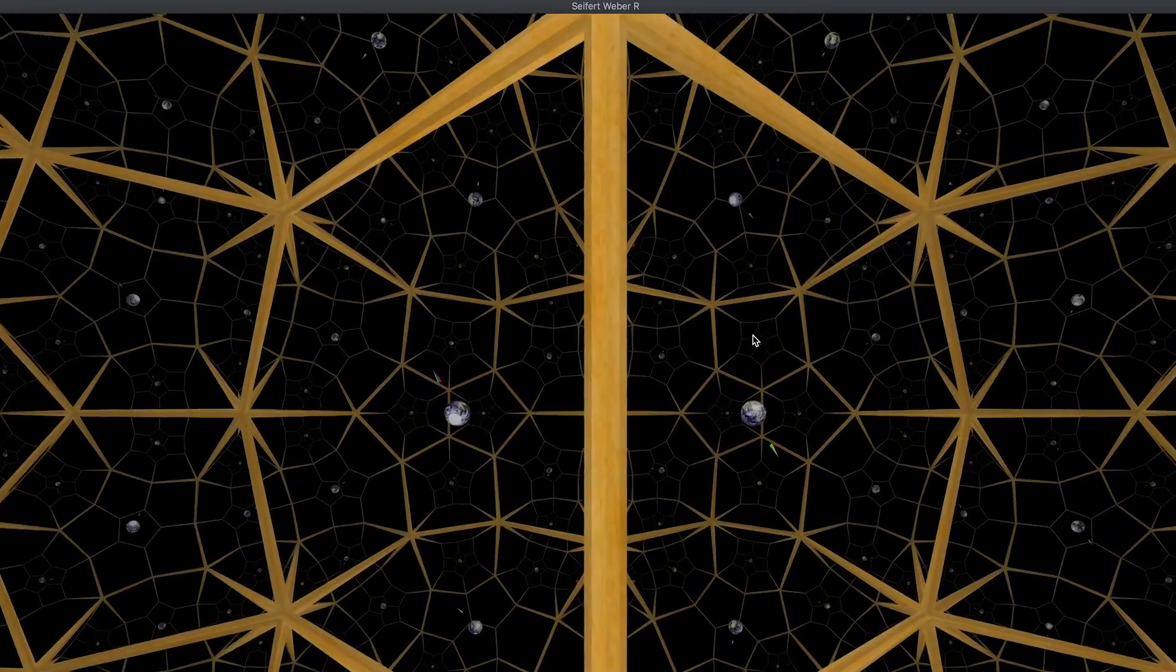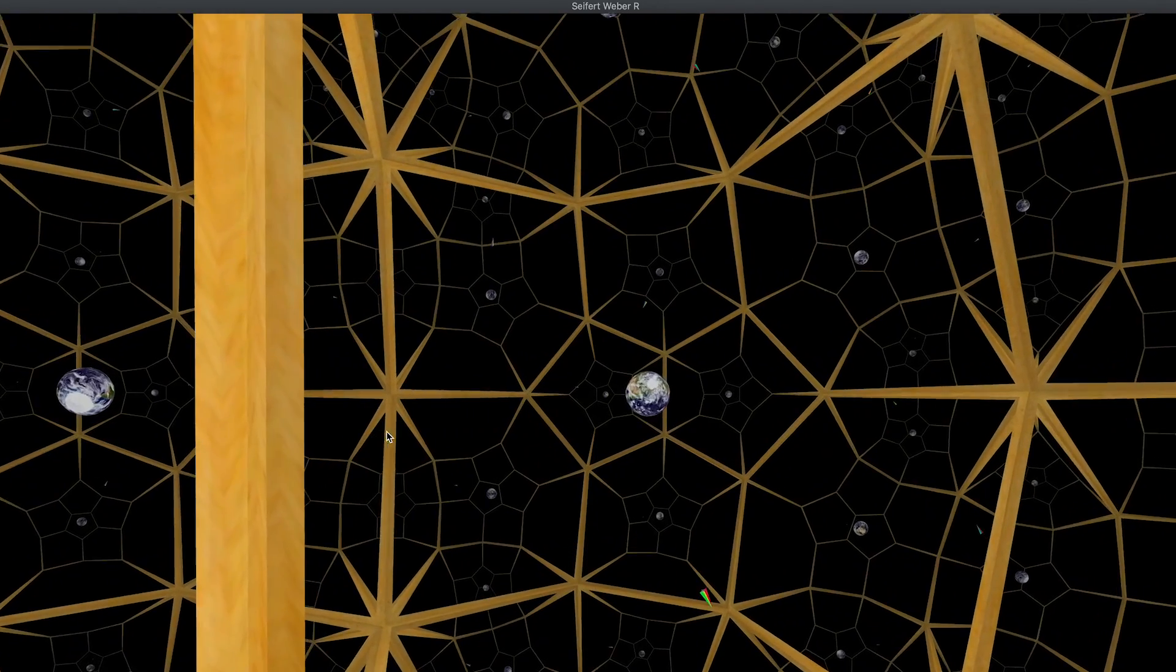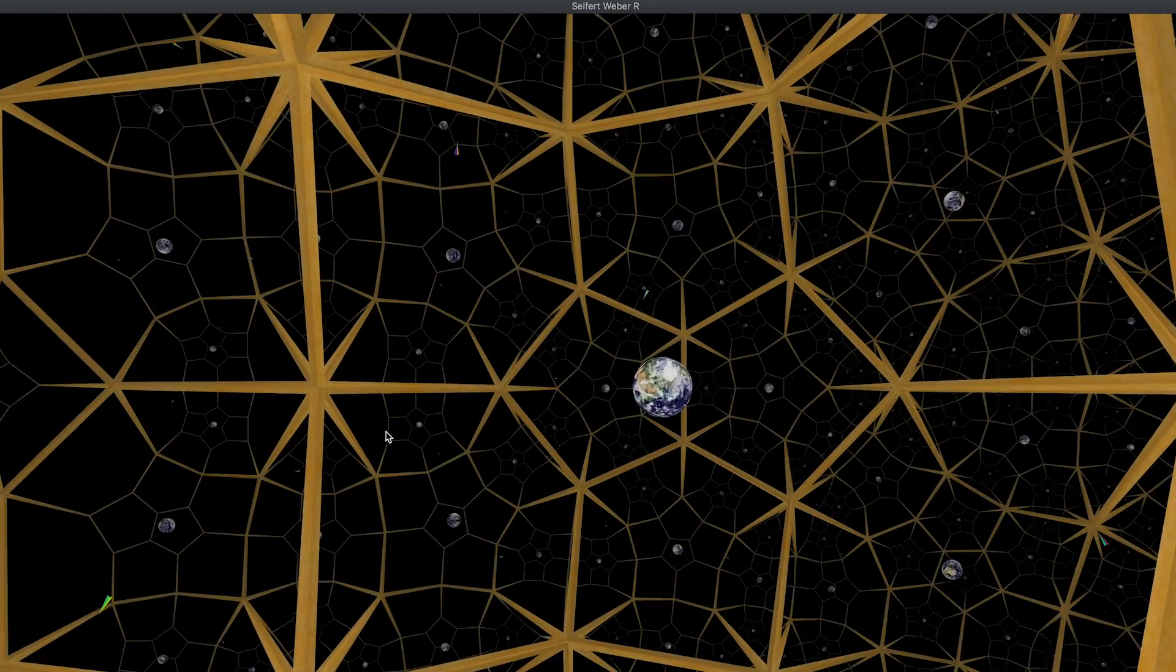Or here's another one, for example. You can see they all have a different look compared to the Euclidean manifolds we saw.